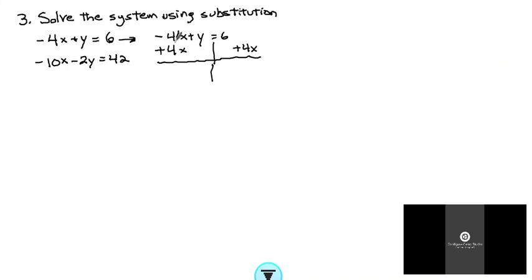So this goes to zero and this turns into y is equal to 6 plus 4x. Now I like my x term first, so using the commutative property I can switch that around. So y equals 4x plus 6.